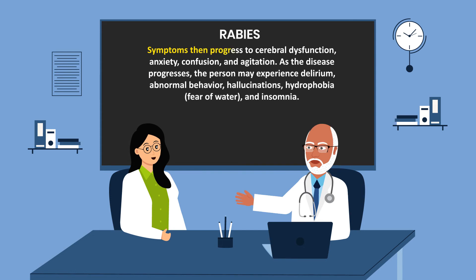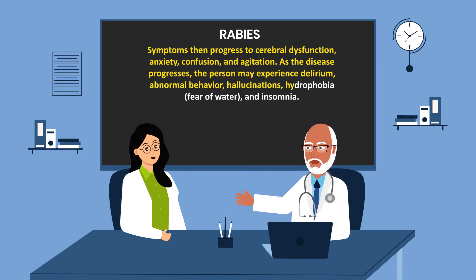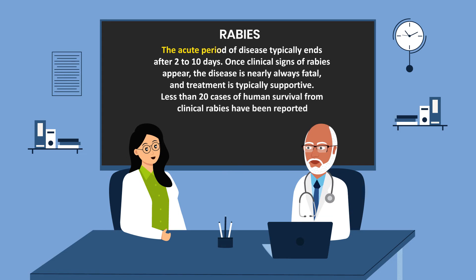Symptoms then progress to cerebral dysfunction, anxiety, confusion, and agitation. As the disease progresses, the person may experience delirium, abnormal behavior, hallucinations, hydrophobia — which is fear of water — and insomnia. The acute period of disease typically ends after two to ten days. Once clinical signs of rabies appear, the disease is nearly always fatal and treatment is typically supportive. Less than 20 cases of human survival from clinical rabies have been reported.